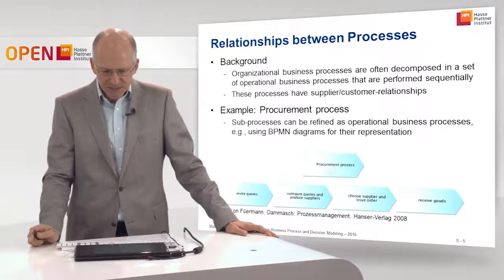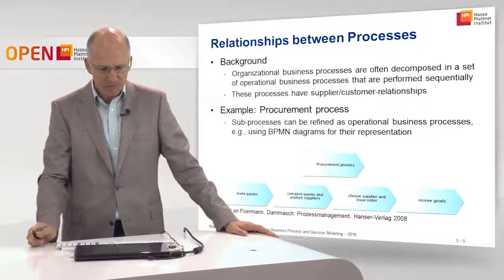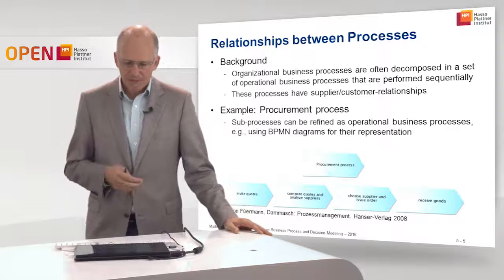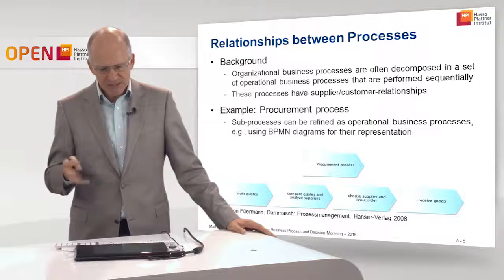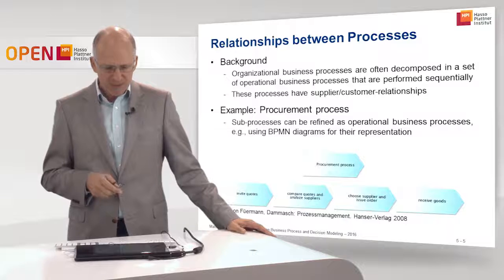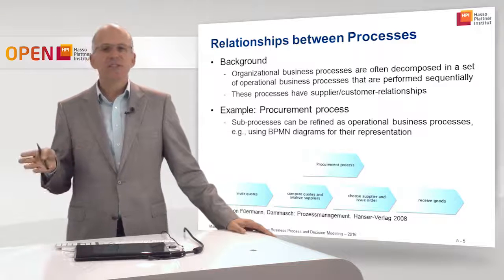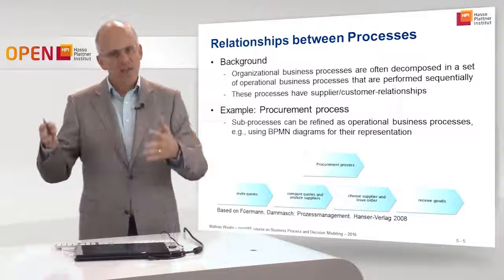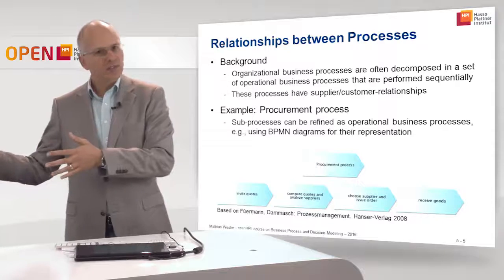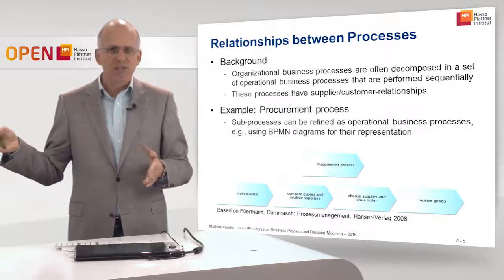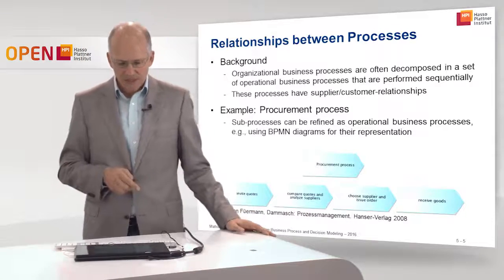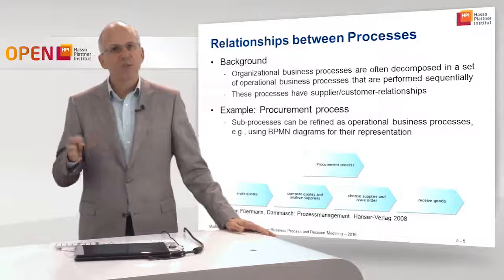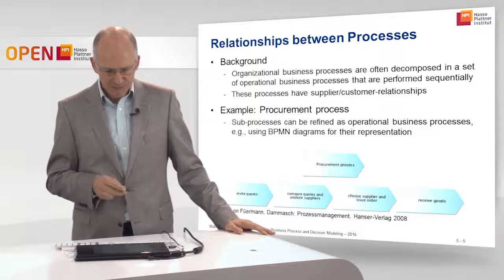Organizational business processes are often decomposed into a set of operational business processes that can be performed sequentially. There is a reason for this sequence: the first process creates something that the second uses, the second creates something that the third uses, and so forth. So there is a causal relationship between these processes, and this relationship leads to their sequential execution.